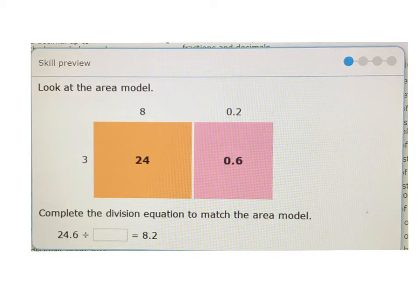I really like this question in particular. Look at the area model. Complete the division equation to match the area model. So 24.6 or 24 and 6 tenths. We have 24 whole here, 6 tenths here. And it says divided by what. Obviously, our answer here is 3 equals 8.2. So I like that we can see that 24 divided by 3 is 8. So that's that first part. We have the 8 being the answer. The second, the 0.6 over here, divided by 3 is 0.2. And together, 8 and 0.2 make 8.2.